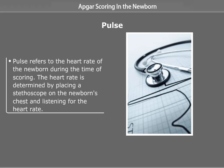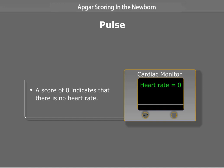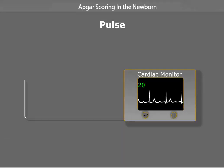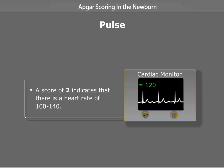Pulse refers to the heart rate of the newborn during the time of scoring. The heart rate is determined by placing a stethoscope on the newborn's chest and listening for the heart rate. A score of 0 indicates that there is no heart rate. A score of 2 indicates a heart rate of 100 to 140.